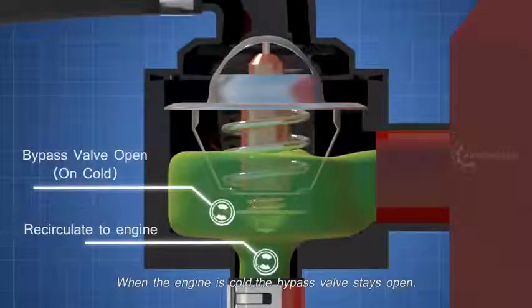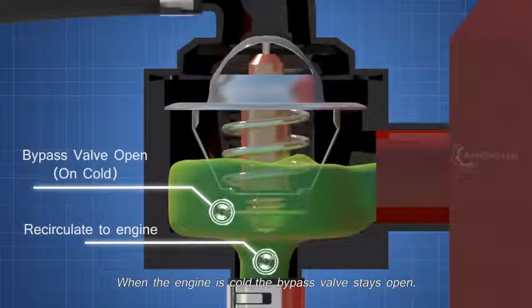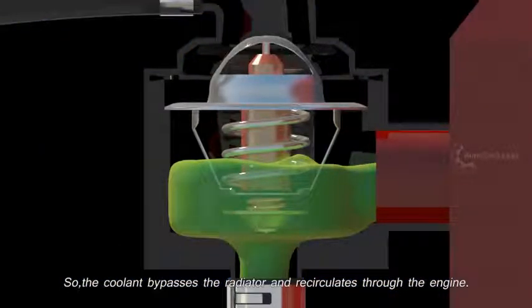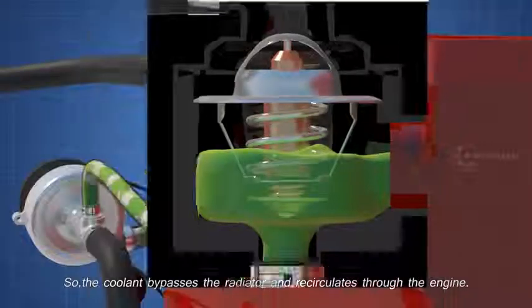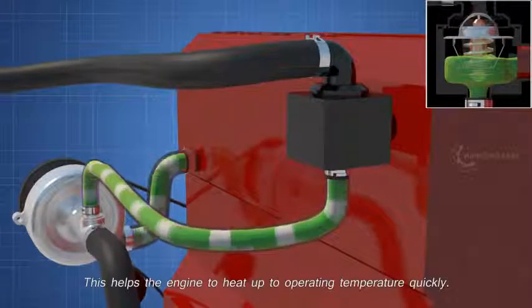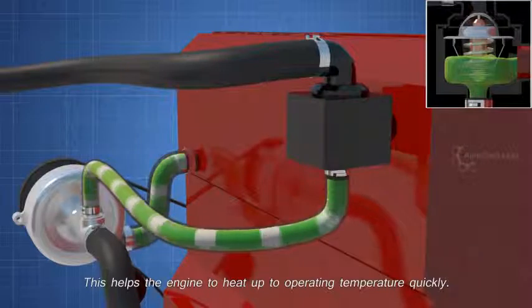When the engine is cold, the bypass valve stays open. So, the coolant bypasses the radiator and recirculates through the engine. This helps the engine to heat up to operating temperature quickly.